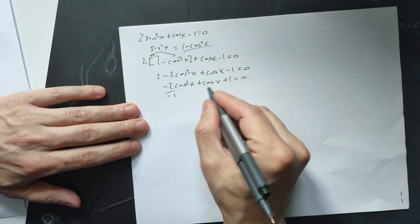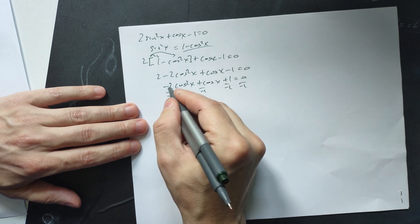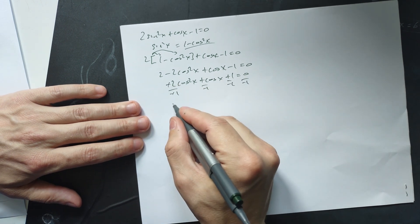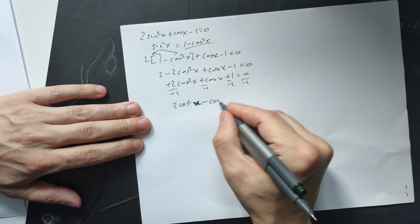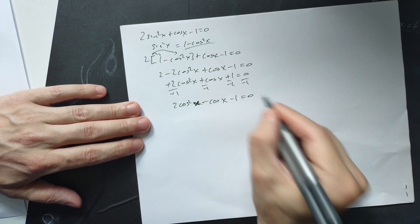But then divide through by negative 1 every term like this all the way across. So cancel the negatives. You're going to have 2 cosine squared x like this minus cosine x minus 1 is equal to 0.